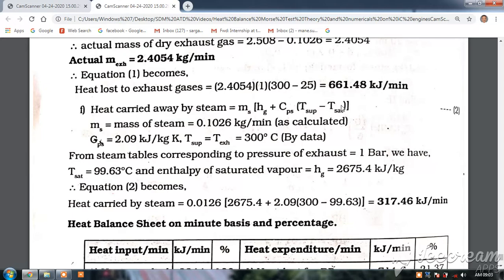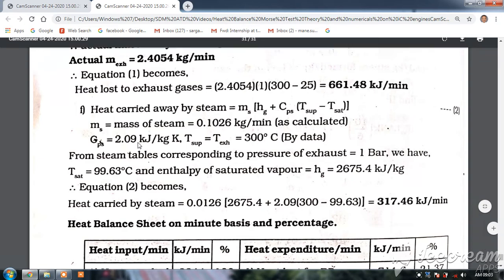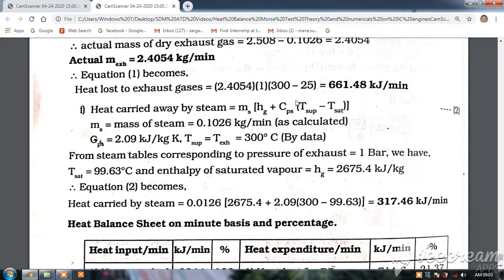Mass of steam is 0.1026 kg/min calculated. This is 2.09 kilojoules - c_p of steam is given in the problem. If c_p is not given, I remember it as 1-2-4: 1 is for exhaust gases, 2 is for steam, and 4 is for water.